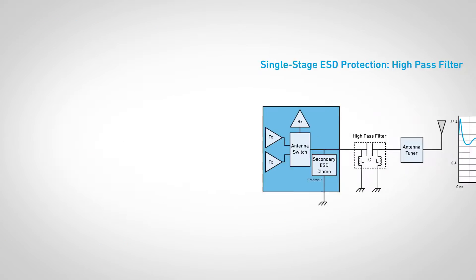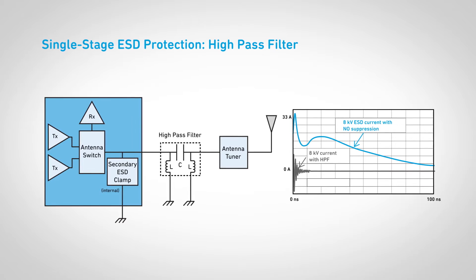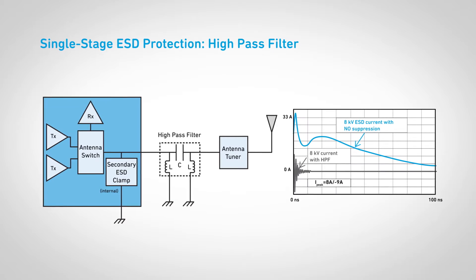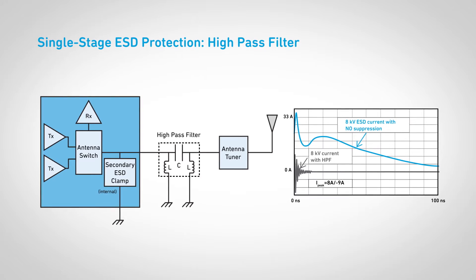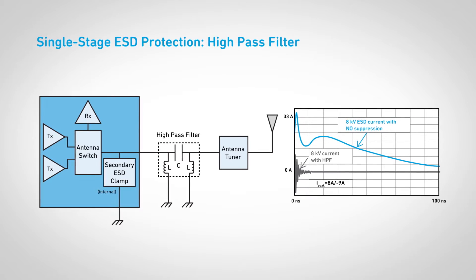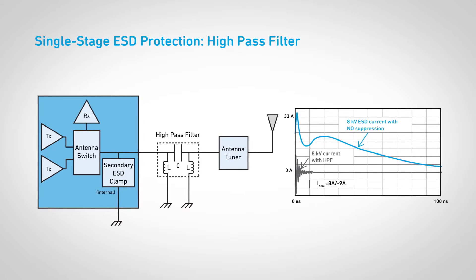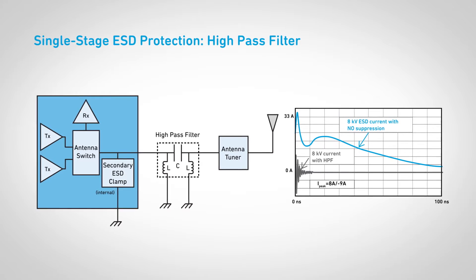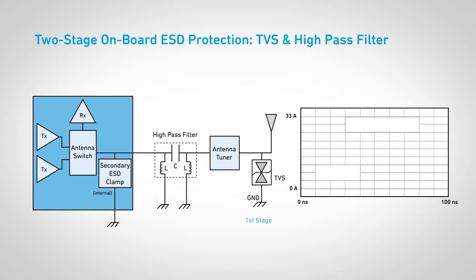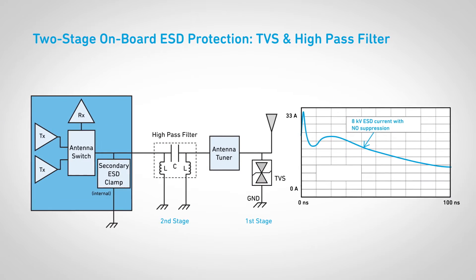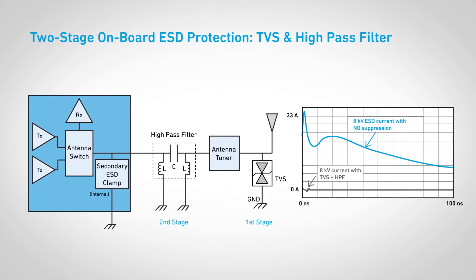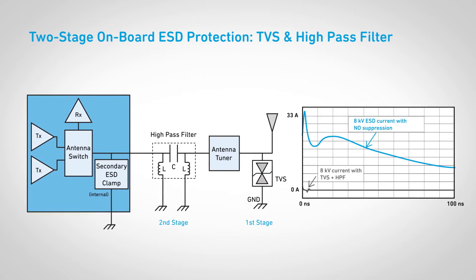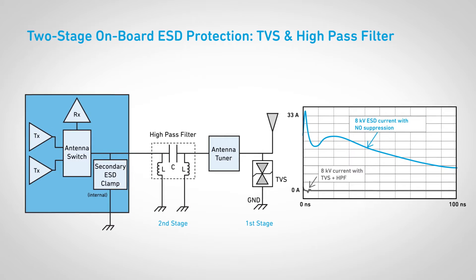This example shows a high-pass filter using shunt inductors in a PI network configuration. The shunt inductor network suppresses most of the pulse, however not enough to mitigate damage to the IC. Using a two-stage approach with a TVS diode near the antenna is more effective. The high-pass filter with the TVS device further suppresses the ESD current pulse.